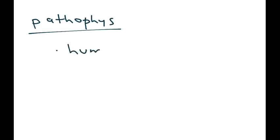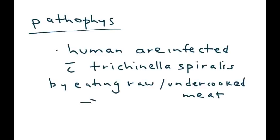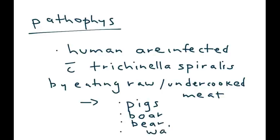Humans are infected with this parasite by eating raw or undercooked meat. The types of meat commonly involved include meat from several animals such as pigs, boar, bear meat, and sometimes other exotic types of meat like walrus. What essentially happens is the larvae of this organism infect the human and eventually go into the skeletal muscle cells.